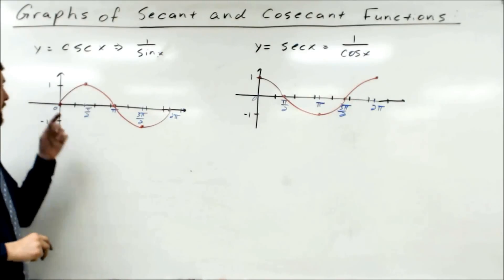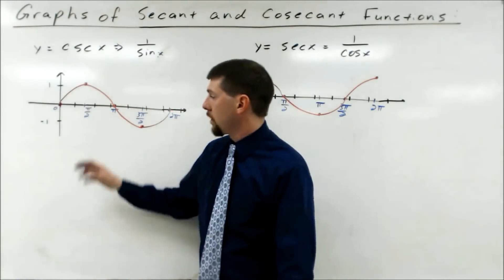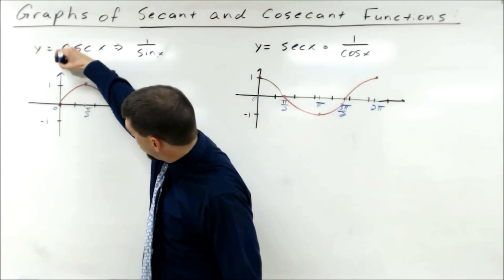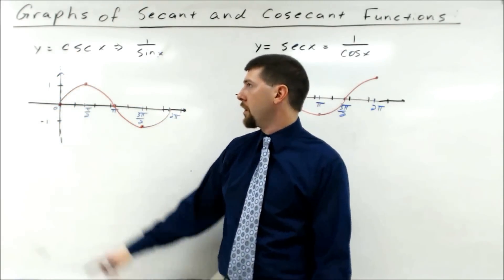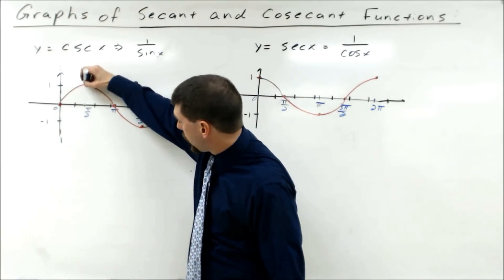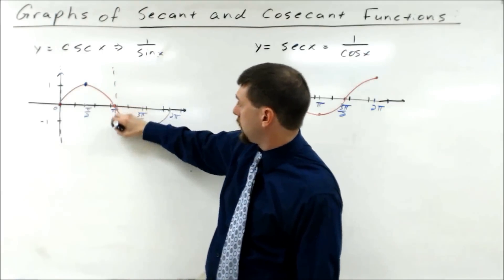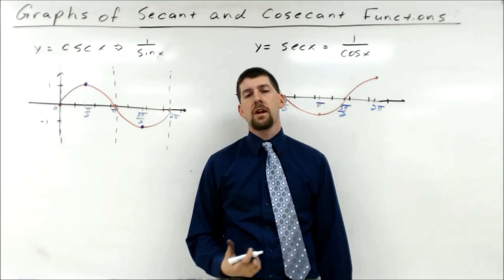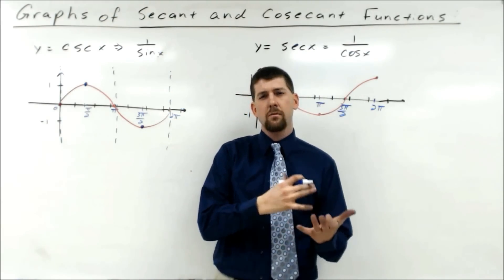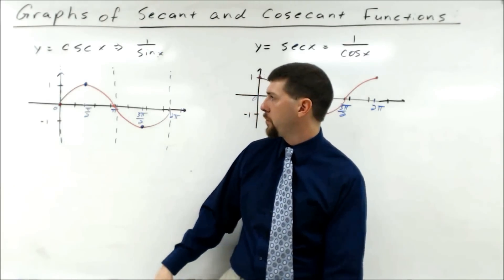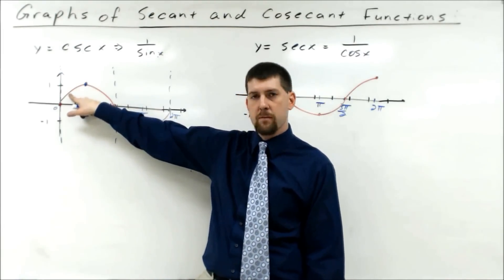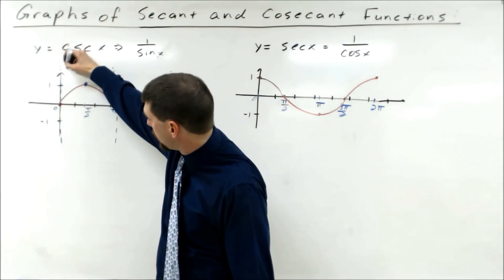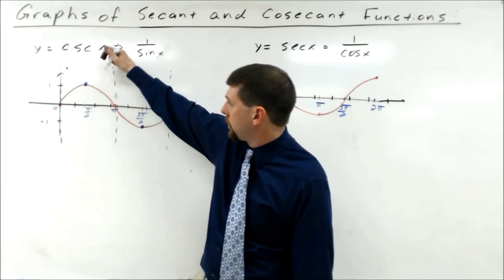If we look at zero, the reciprocal of zero is undefined, so we get a vertical asymptote there. The reciprocal of one is one, so that point stays the same. Reciprocal of zero is undefined again. Reciprocal of negative one stays the same. And the reciprocal of zero is still undefined. Looking at a few other points: if we have approximately one half, the reciprocal of one half is two, so at that point the reciprocal puts us up at two.